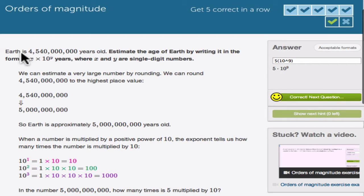They give us that the Earth is about 4,540,000,000 years old, and they want us to estimate the Earth by writing it in x times 10 to the y years. Now here, x is the first factor, and y is the exponent in scientific notation.